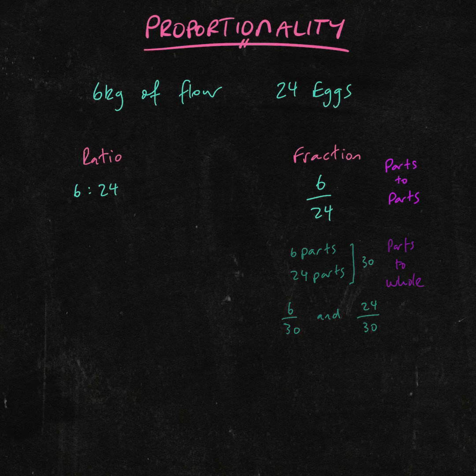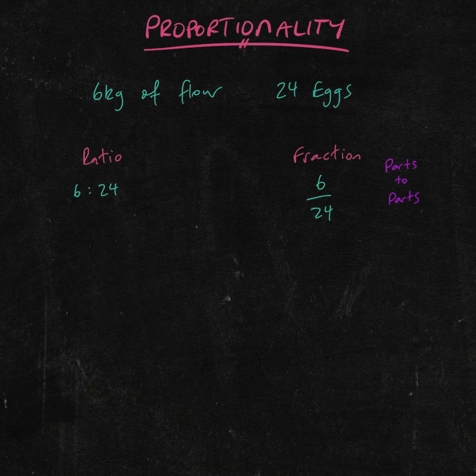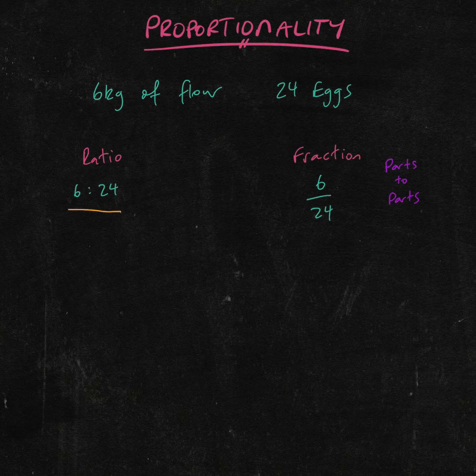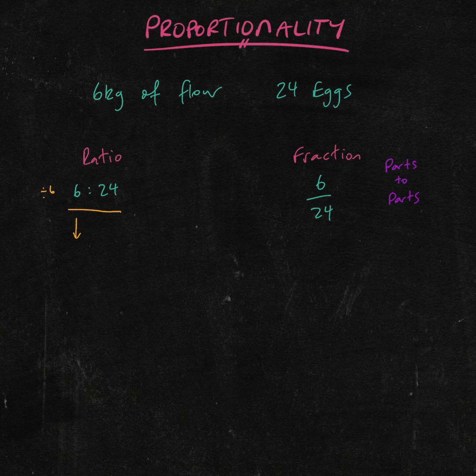Now, usually it is ideal to have your ratio in its simplest form. So if we take our ratio of 6 kilos of flour to 24 eggs, we must find the lowest common factor in these two numbers. Well, 6 can be divided by 6 to get 1.